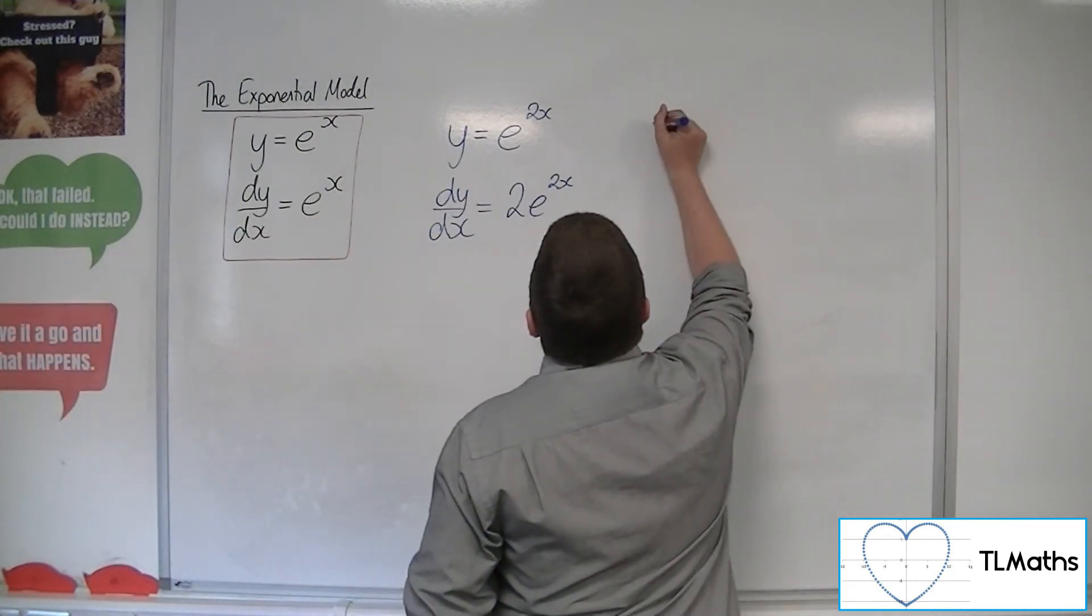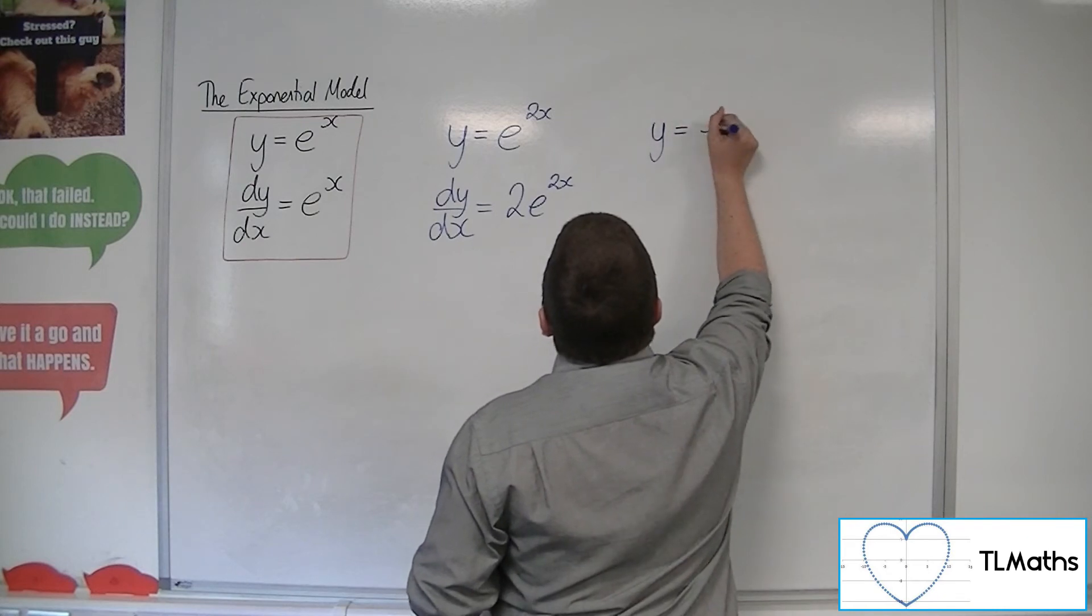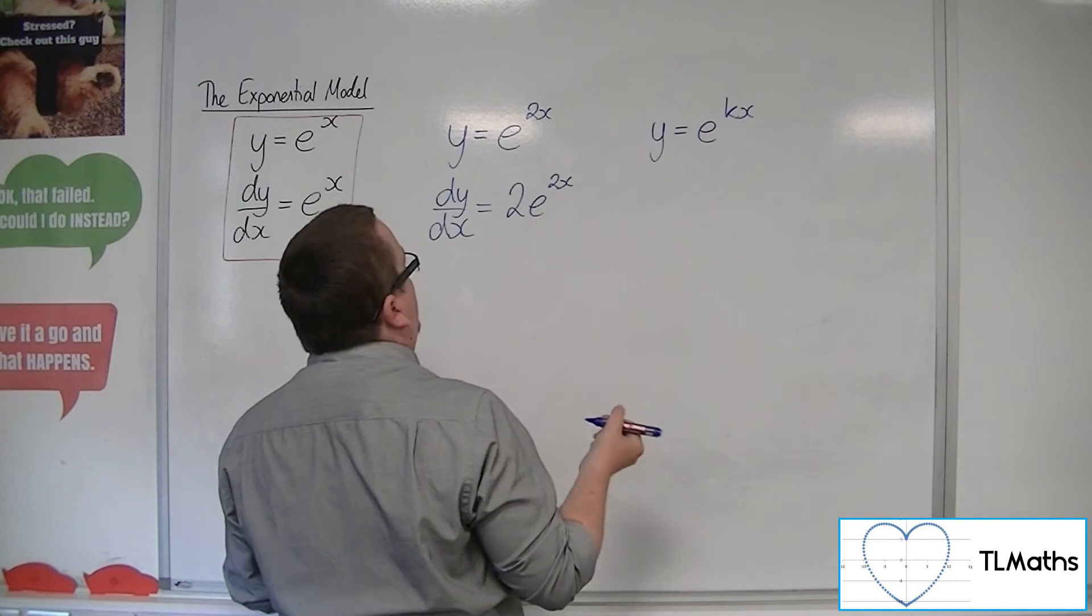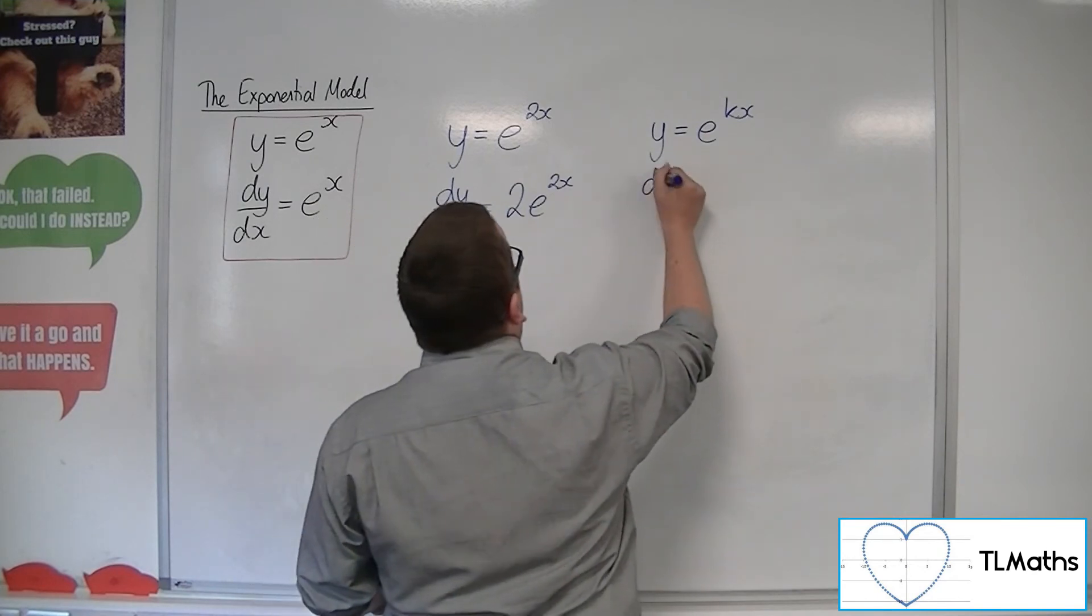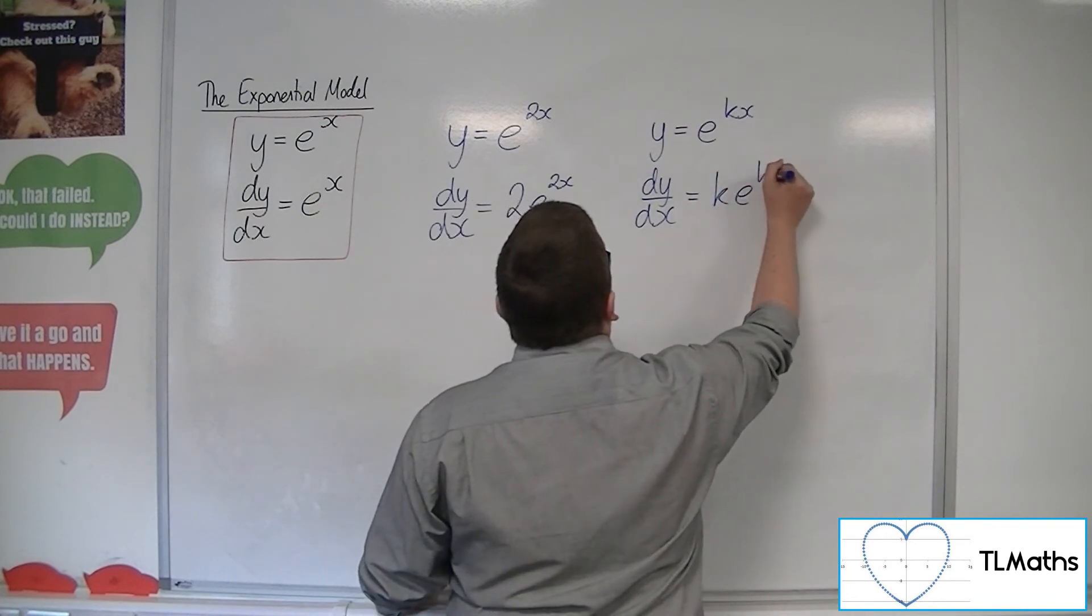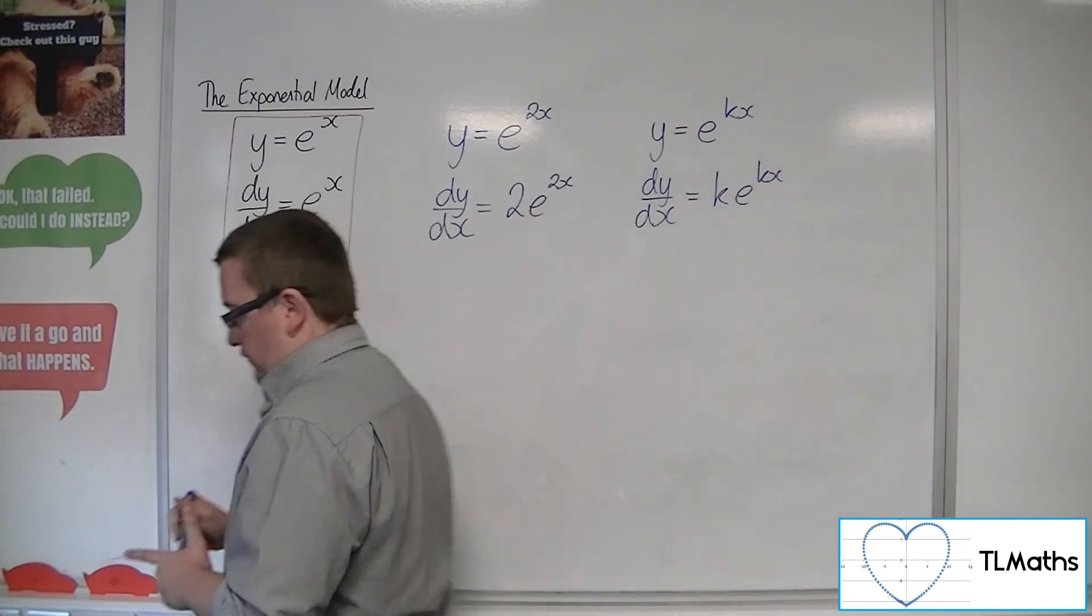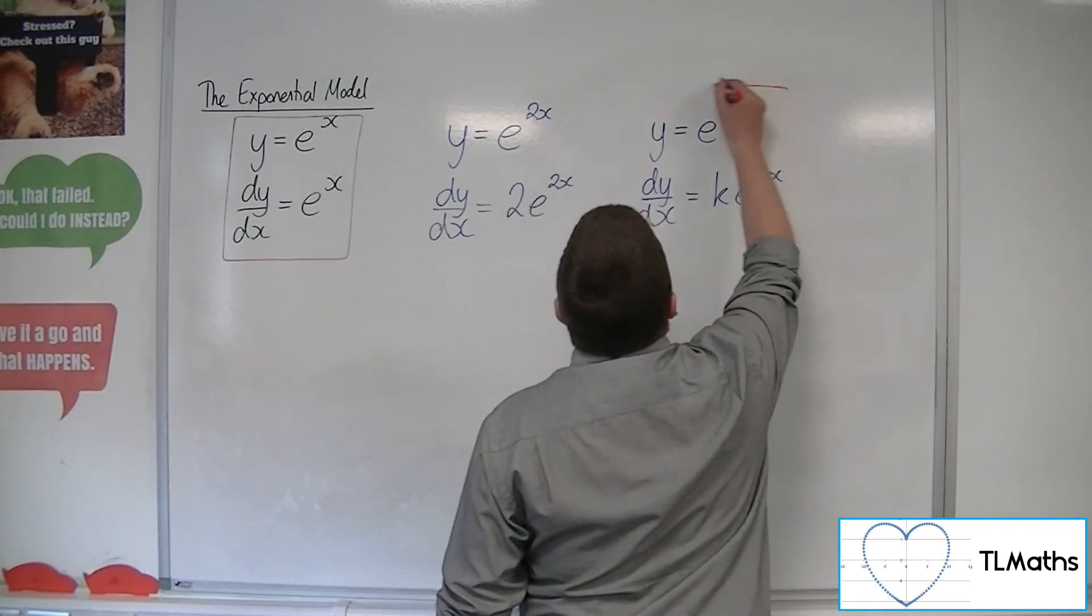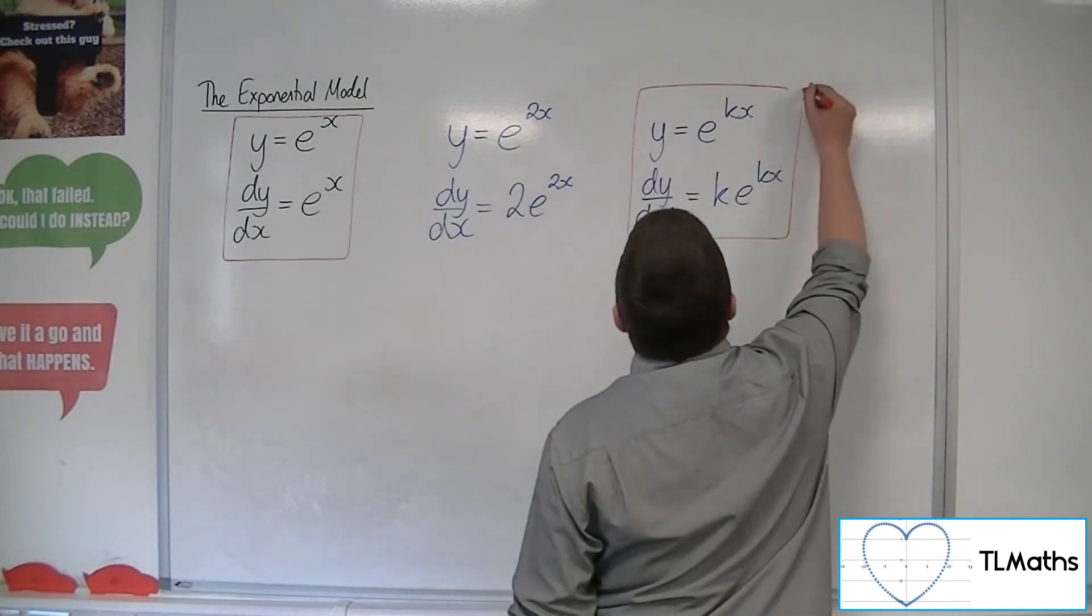So, if you've got y equals e to the 2x, then the gradient function is 2e to the 2x. And this is a very important thing to remember.